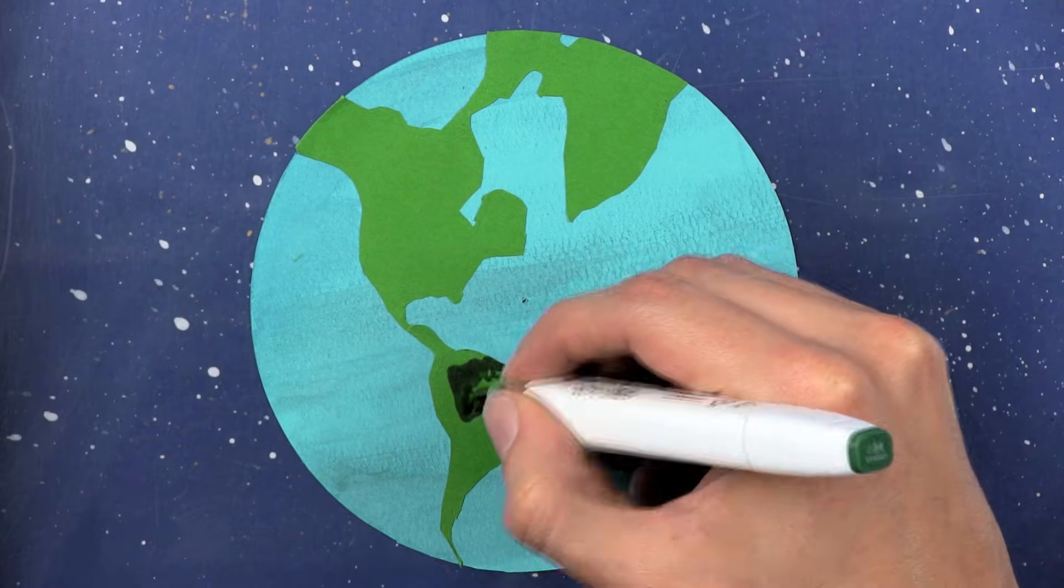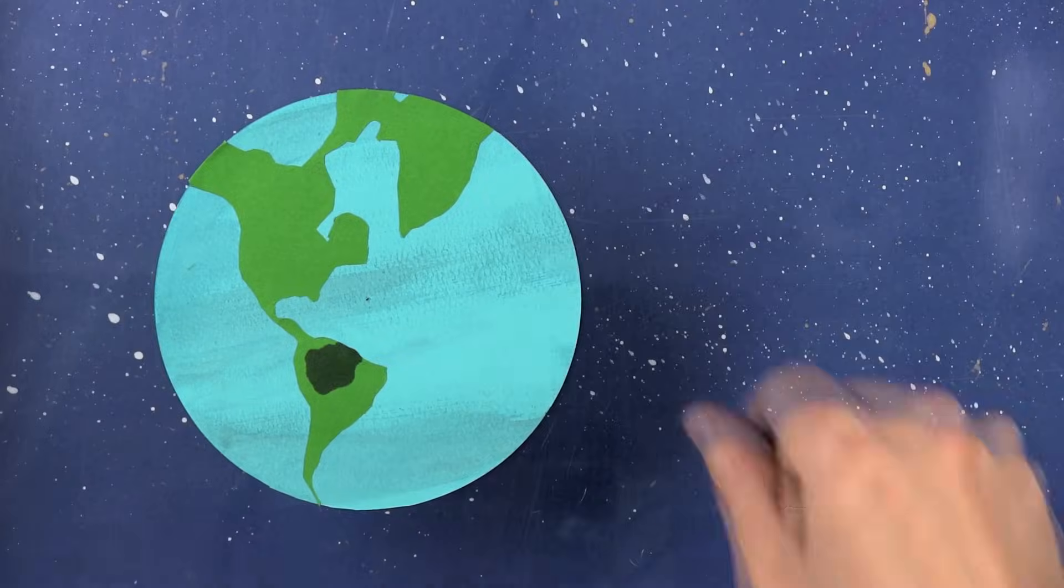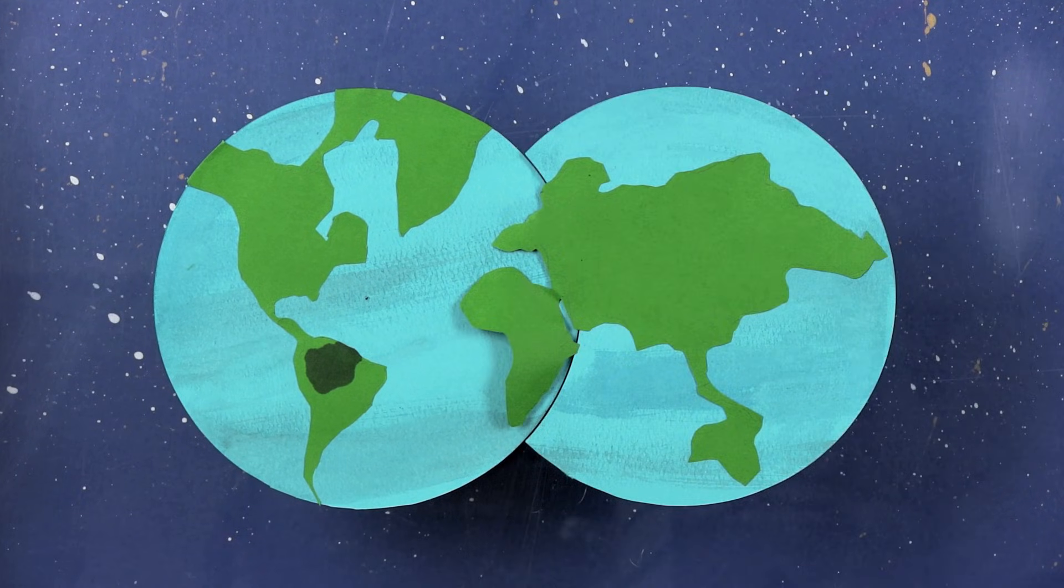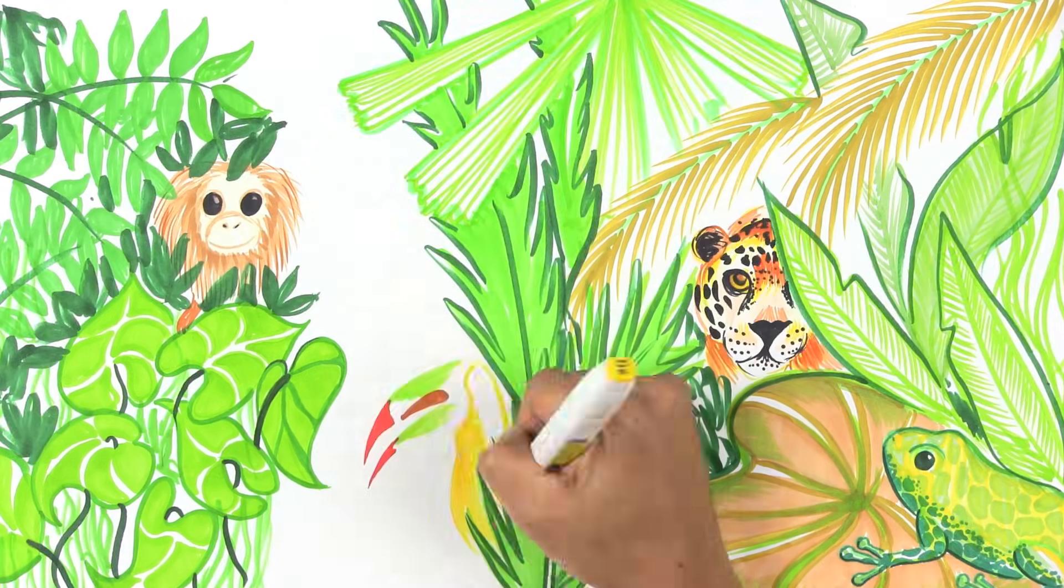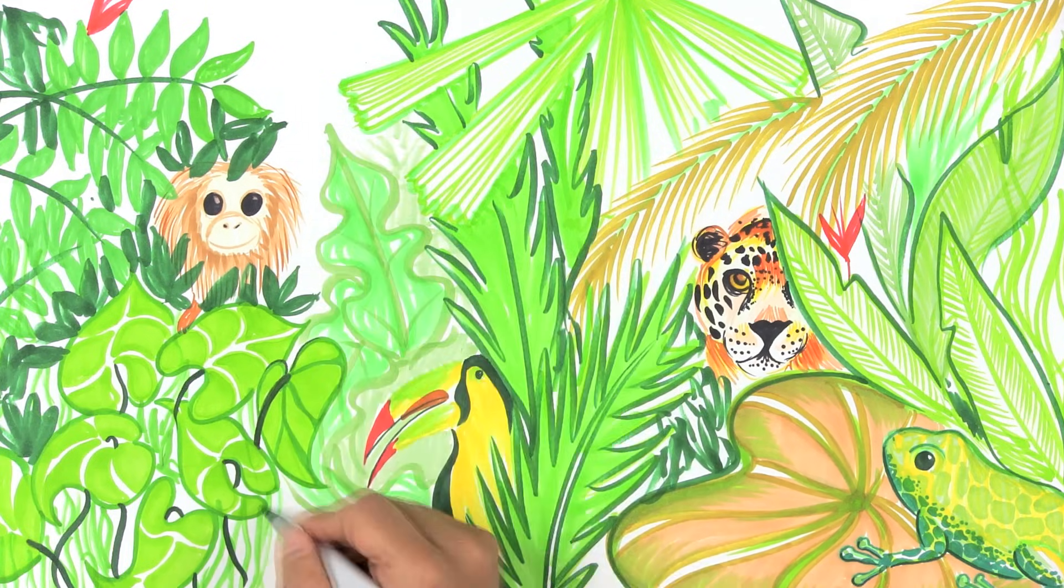This is the Earth, and this portion here is the Amazon. As small as it may look when compared to the rest of the planet, it actually has a huge importance for life due to the part it plays in the water cycle and temperature regulation.